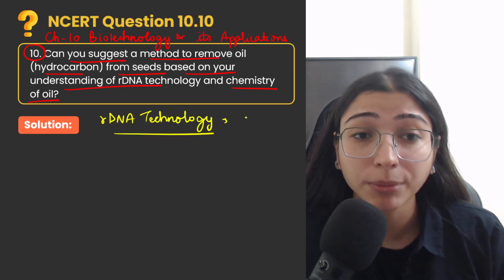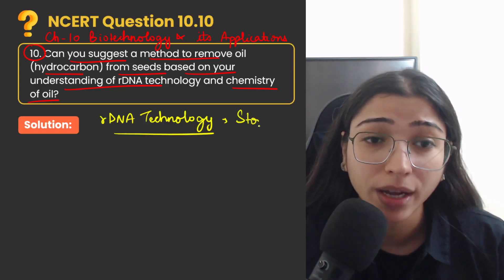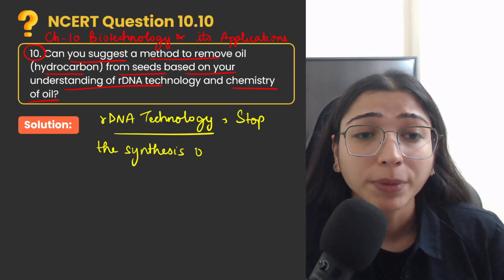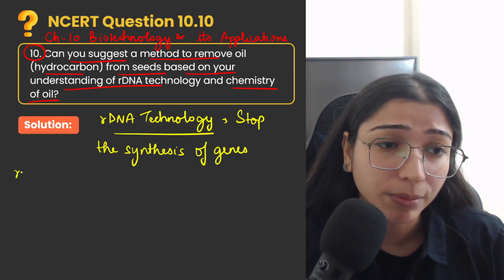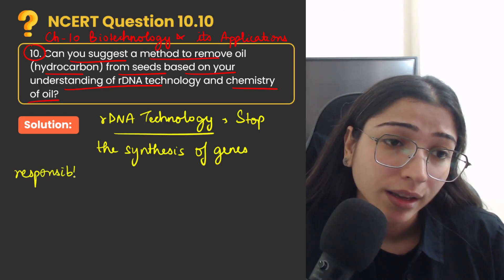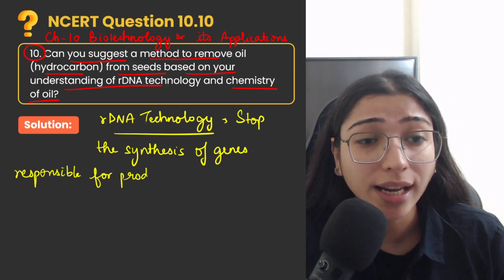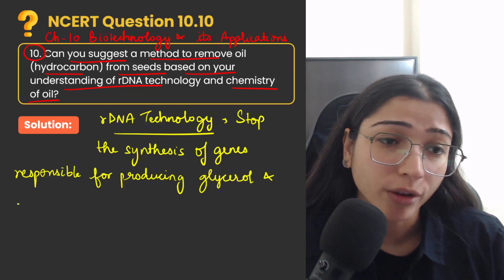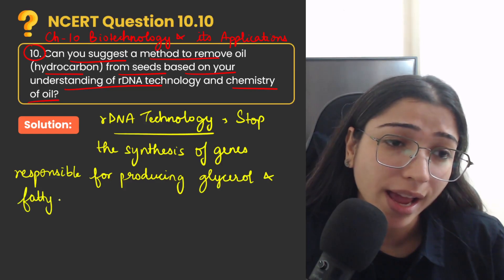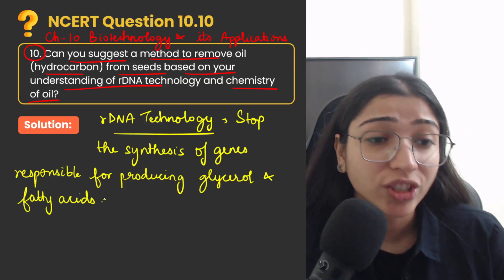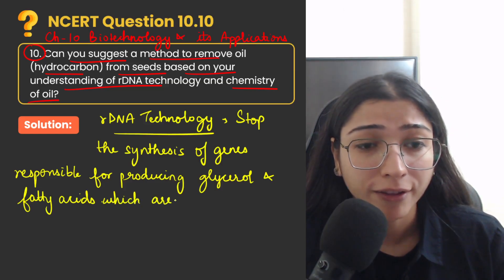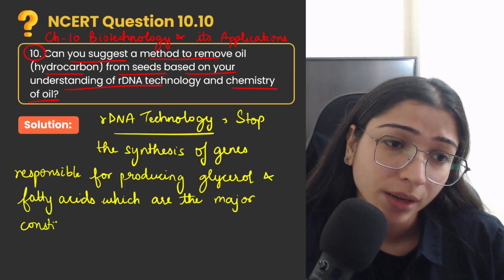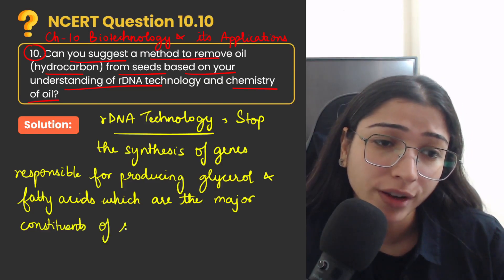So using recombinant DNA technology, we can stop the synthesis of genes responsible for producing glycerol and fatty acids, which are the major constituents of seed oil.